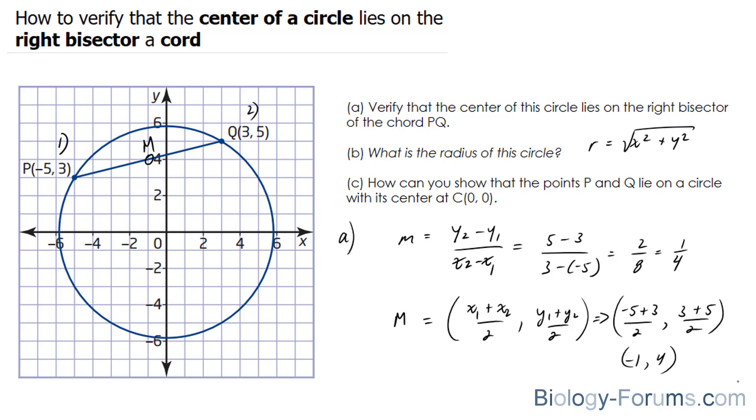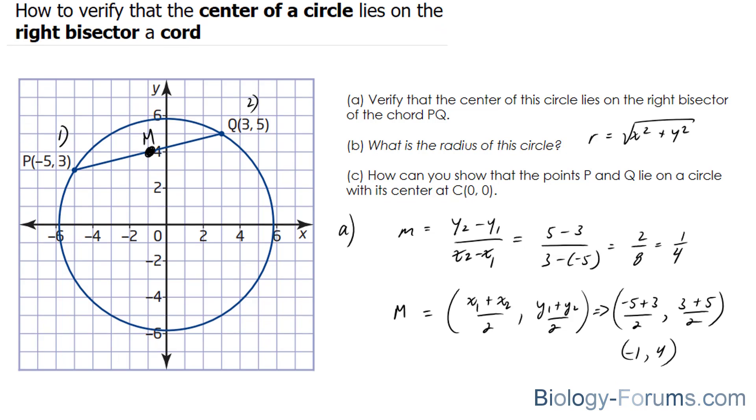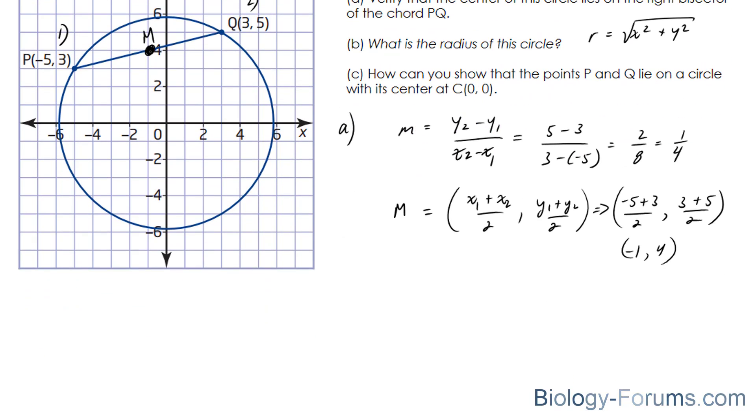Next, what we will do is find the equation that represents the point from m to the center. And the reason why we're doing this is that by finding the equation for this line, we can prove that the y-intercept is in fact at 0 and 0. And that would ensure that it does, in fact, lie on the bisector of chord PQ. So, the slope of this line here will be the negative reciprocal of this slope of P and Q. Because the right bisector always lies at 90 degrees.